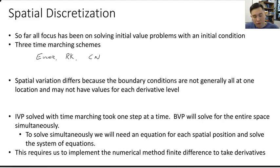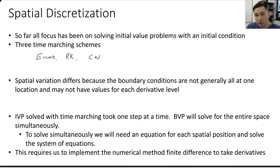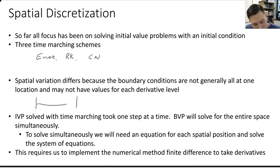Spatial variations differ because the boundary conditions are not generally all at one location and may not have values for each of the different differential levels. For instance, if we're evaluating the temperature between two ends, we could say our temperature at one end is φ equal to zero, and the temperature at the other end is φ equal to one.